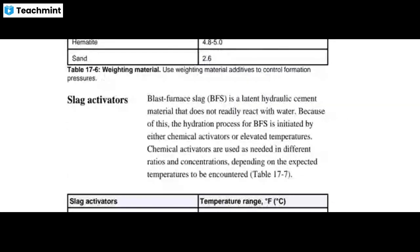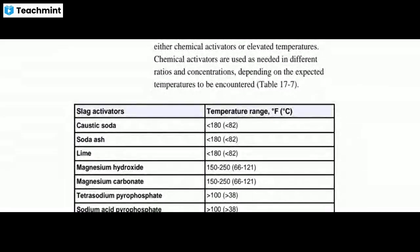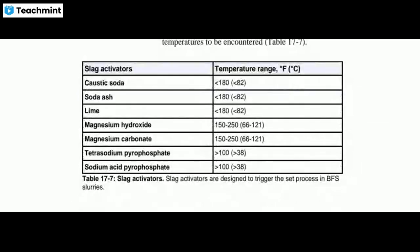Blast furnace slag is a latent hydraulic cement material that does not readily react with water. Because of this, the hydration process for BFS is initiated by either chemical activators or elevated temperature. Chemical activators are used in different ratios and concentrations depending on the expected temperature encountered. Slag activators include caustic soda, soda ash, lime, magnesium hydroxide, magnesium carbonate, tetrasodium pyrophosphate, and sodium acid pyrophosphate. These are designed to trigger the set process in BFS slurries, with temperature ranges shown.